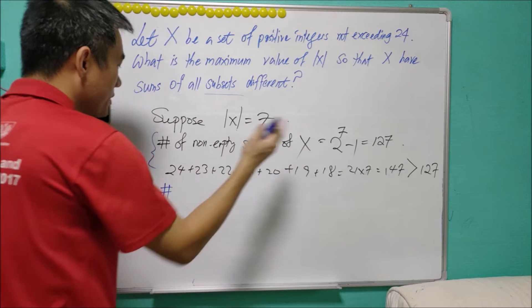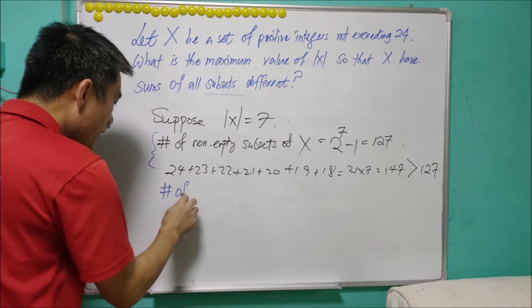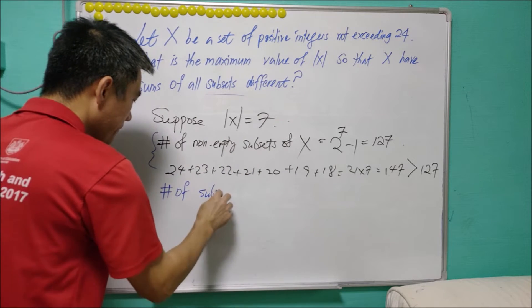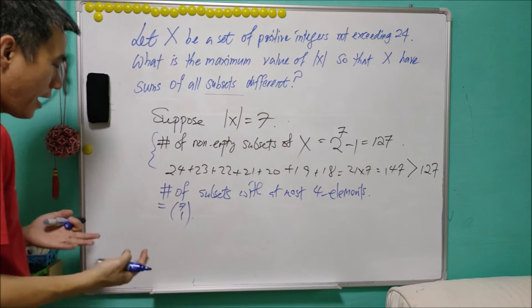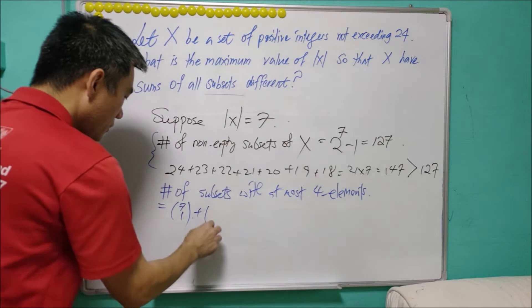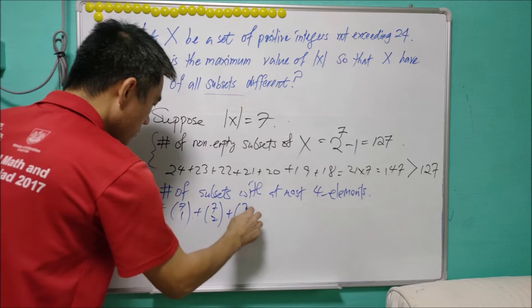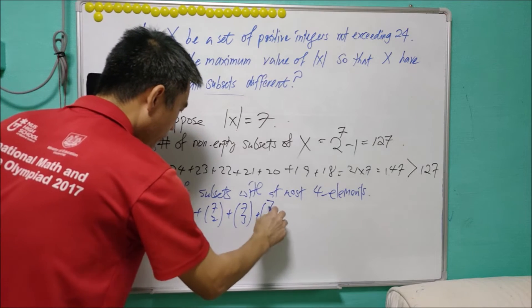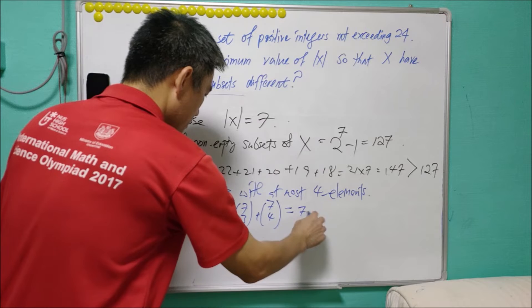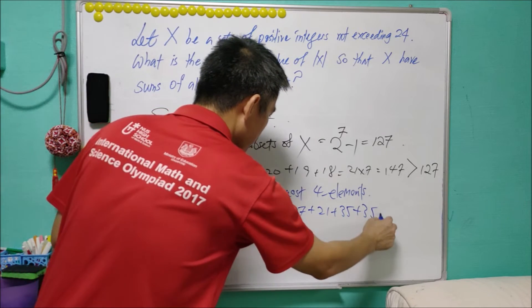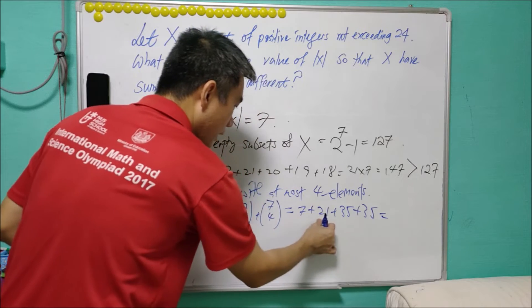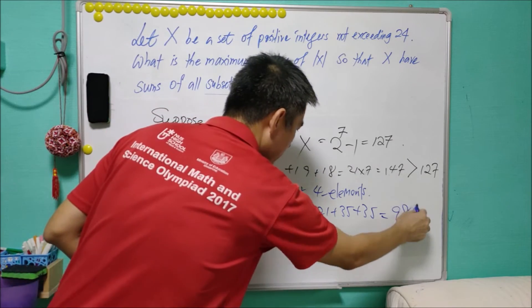Then we have to come up with one interesting way. Instead of considering all non-empty subsets, we consider the number of subsets with at most 4 elements. The subset may have only 1 element, 2 elements, 3 elements, or 4 elements. It is C(7,1) + C(7,2) + C(7,3) + C(7,4) = 7 + 21 + 35 + 35 = 98.